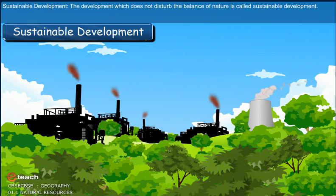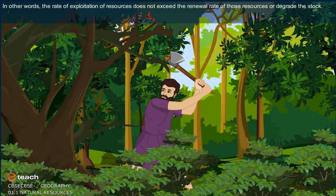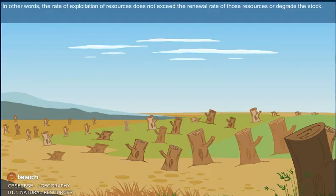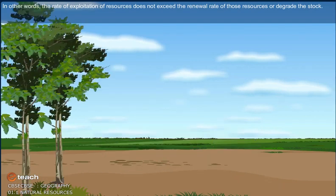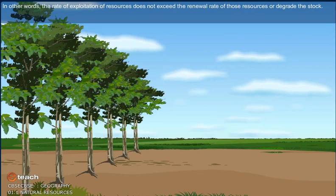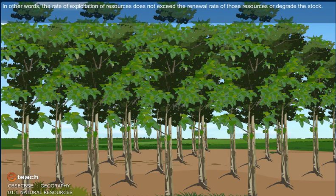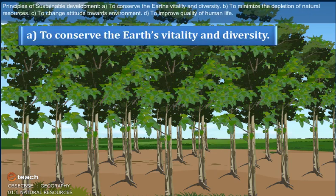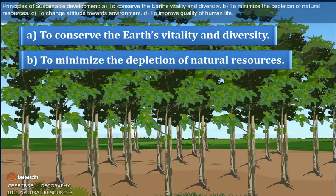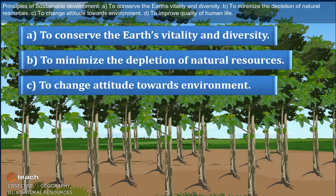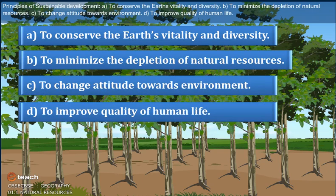Sustainable Development is the development which does not disturb the balance of nature. The rate of exploitation of resources should not exceed that of renewal. Goals include conserving the earth's vitality and diversity, minimizing depletion of natural resources, changing attitudes towards the environment, and improving quality of human life.